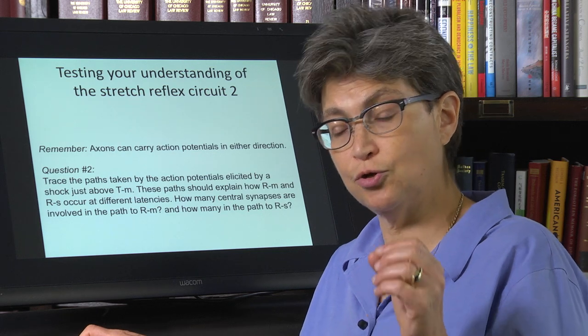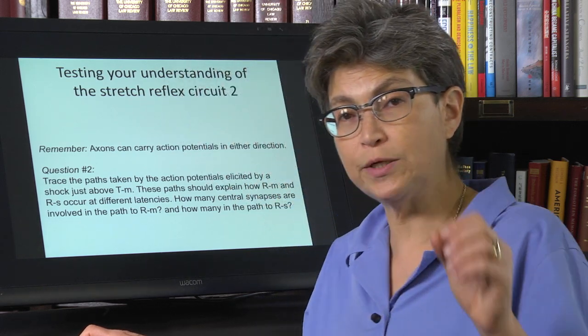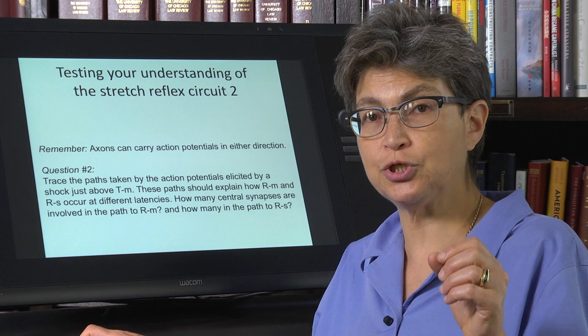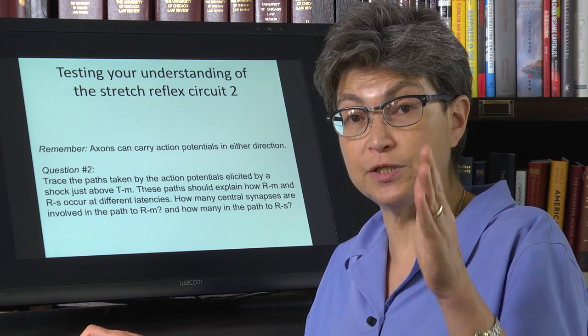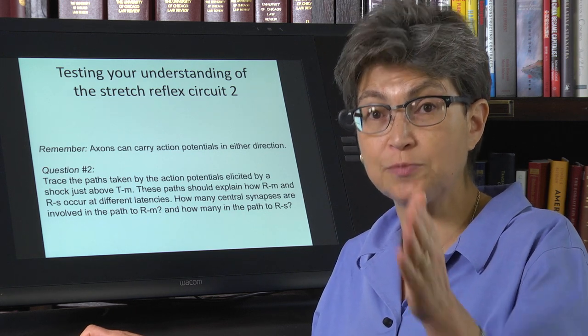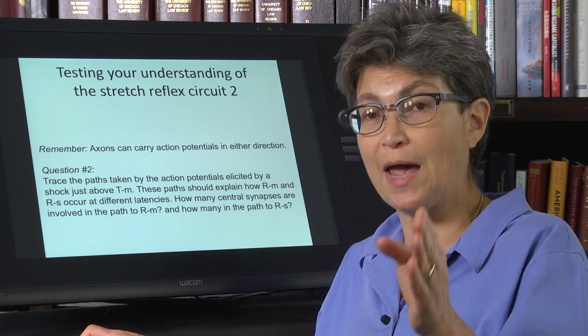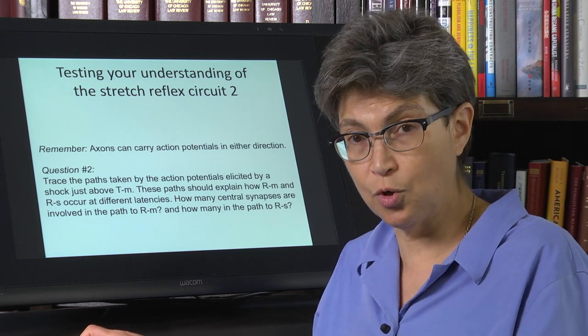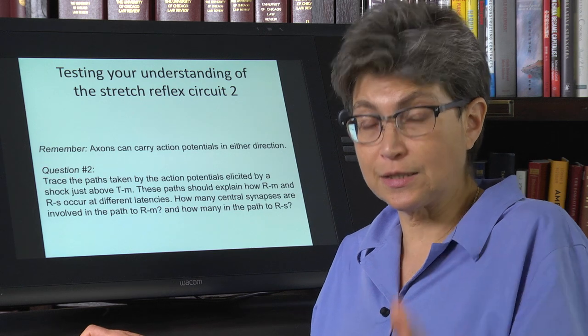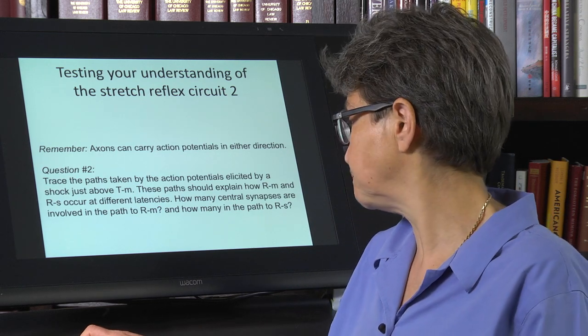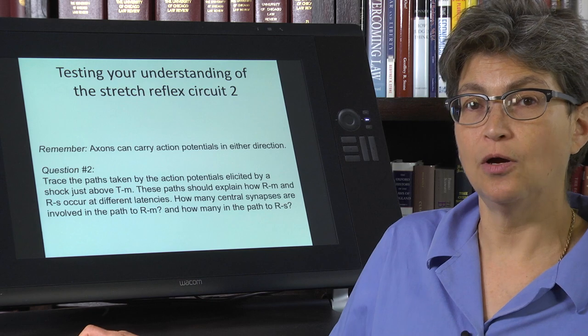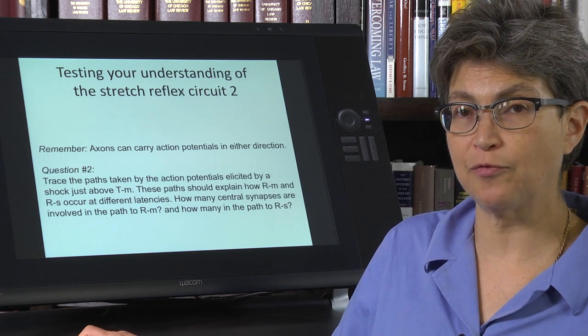And so now you're going to describe what's the pathway by which a shock of the sensory activation of sensory neurons produces a response, and what's the pathway by which activation of the motor axons produces a response? How many synapses are involved in each of those pathways?